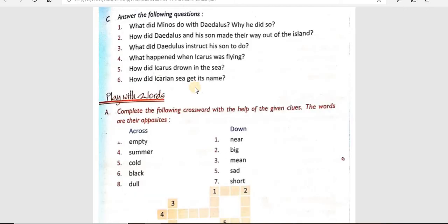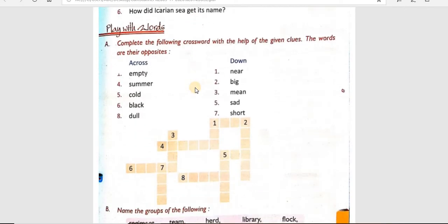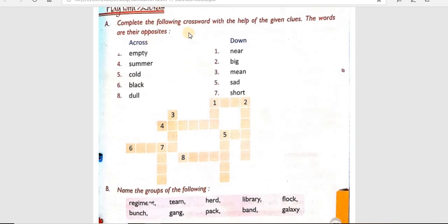तो हमारा ये portion complete हो गया है। इसके बाद हम 'Play with Words' activity करेंगे — कुछ crossword है। Complete the following crossword with the help of the given clues; the words are their opposites. आपको crossword को clues से मिलाना है। ये puzzle आपके लिए homework है — पहले आप ये puzzle करके देखेंगे।